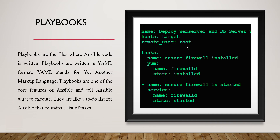The remote user specifies through which user you want to install changes to the nodes — for example, using the root user. Then there is the task section, which consists of plays. I have two tasks here: the first task is to install firewall, and the second task is to start the firewall. That is the structure of a playbook: name, host details, remote user, and tasks.